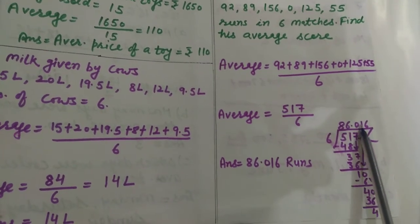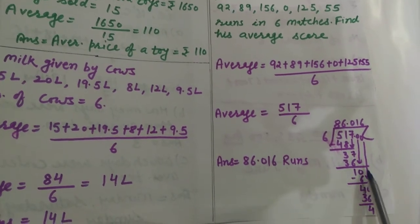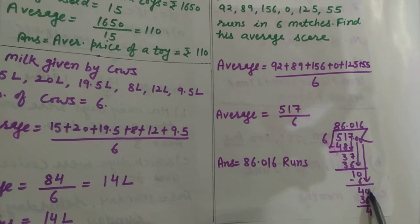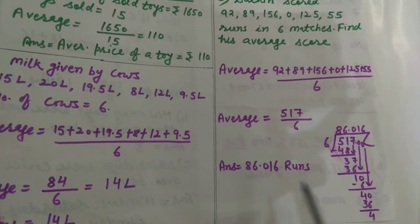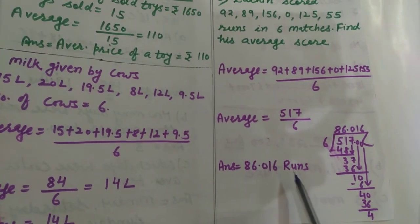Ab yahan par kya hai? 1, 6 se chhota hai, to point lagayenge. Aage aur number bhi given nahi hai, 0 likhenge. 6, 1 ja, 6. 10 mein se 6 minus karenge, 4. After that, 0 laayenge upar se. 6, 6 ja, 36. So the answer will be 86.016 runs.